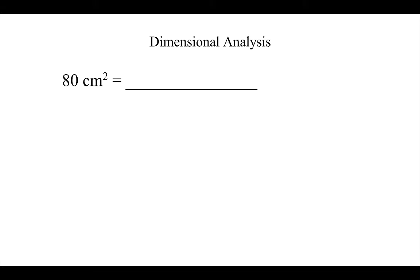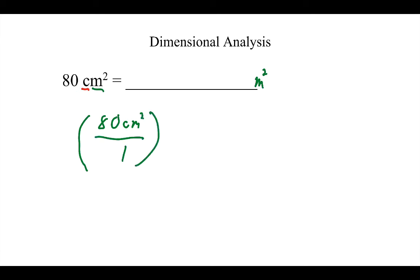Let's start with the idea that I have something that is 80 square centimeters. The first letter is always the prefix and the second is the base unit I want to convert to. So I want to convert 80 square centimeters into square meters, and I can't simply use decimal movement. I'm going to write it in parentheses as 80 square centimeters over 1 — making it into a fraction. Now I want to put in a conversion here, but I do not know how many square centimeters are in one square meter.